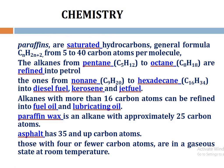Regarding chemistry: paraffins are saturated hydrocarbons with 5 to 40 carbon atoms per molecule. Alkanes from pentane to octane are refined into petrol; from nonane to hexadecane into diesel fuel, kerosene, and jet fuel. Alkanes with more than 60 carbon atoms can be refined into fuel oil and lubricating oil. Paraffin wax is an alkane with approximately 25 carbon atoms; asphalt has 35 or more. Those with fewer carbon atoms are in the gaseous state at room temperature.